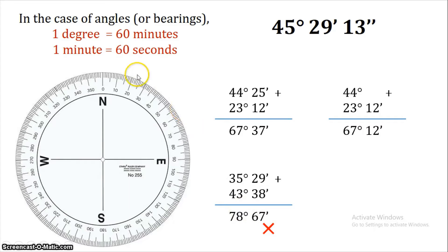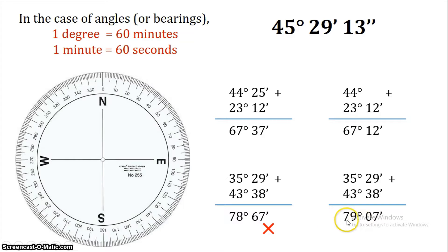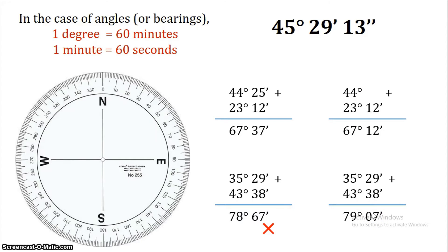We have to note: 60 minutes equals 1 degree. So 67 minutes is 1 degree and 7 minutes. Therefore, 78 degrees plus 1 degree gives us 79 degrees 7 minutes. That is, 67 minutes equals 60 minutes plus 7 minutes, and 60 minutes is 1 degree, so the final answer is 79 degrees 7 minutes.